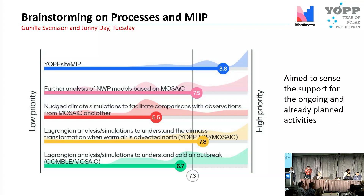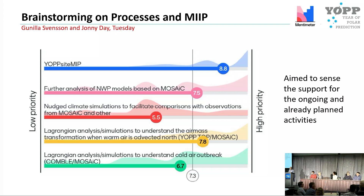The next brainstorming session was the one Johnny Day and I led. We narrowed it down to talk about processes and future MIPs. We started with Mentimeter questions to see if we are doing the right things, and the group really liked YOP site MIP — there was a very high score. Further analysis of models based on MOSAIC did not score as high, possibly because the discussion preceded the MOSAIC session.